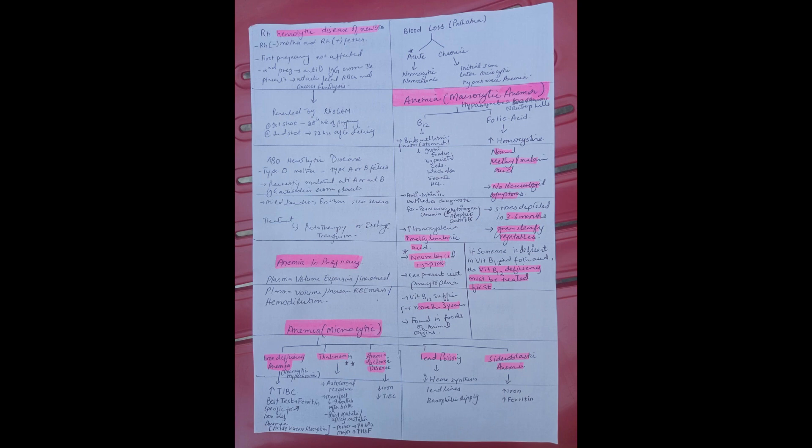Autoimmune atrophic gastritis is the most common cause of pernicious anemia. Homocysteine and methylmalonic acid is increased in vitamin B12 deficiency. Neurological symptoms are also present in B12 deficiency and it also presents with pancytopenia.